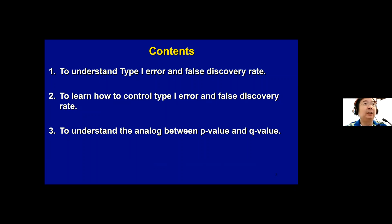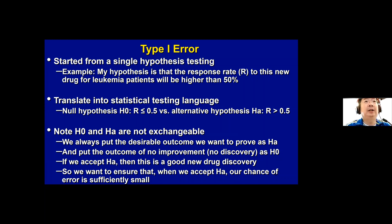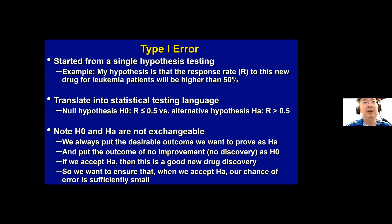Starting from type 1 error, we first consider just one single hypothesis testing. For example, in a cancer center, we consider questions like: I have a new drug, and my hypothesis is that the response rate of this new drug for leukemia patients will be higher than 50%, which is the best the current standard therapy can do. We translate this into statistical testing language: the null hypothesis H0 is that the response rate is less than or equal to 50%, and the alternative hypothesis is that the response rate is greater than 50%.